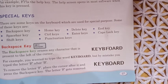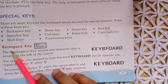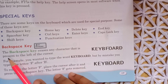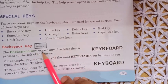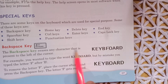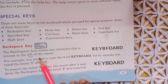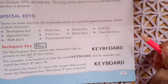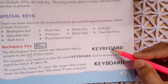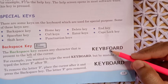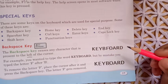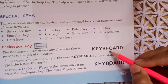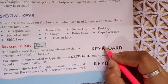In the category of special keys, the first key is the backspace key. The backspace key erases any character that is present on the left of the cursor. A small blinking line on the screen is known as a cursor. The backspace key is used to erase the letter which is present on the left side of the cursor.